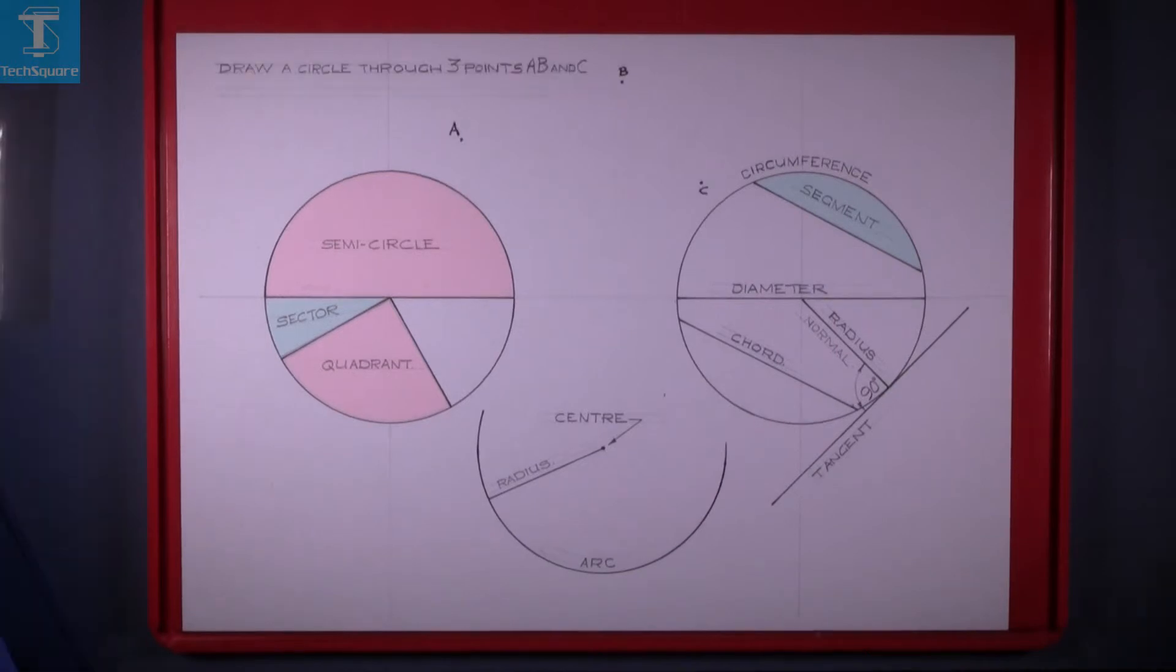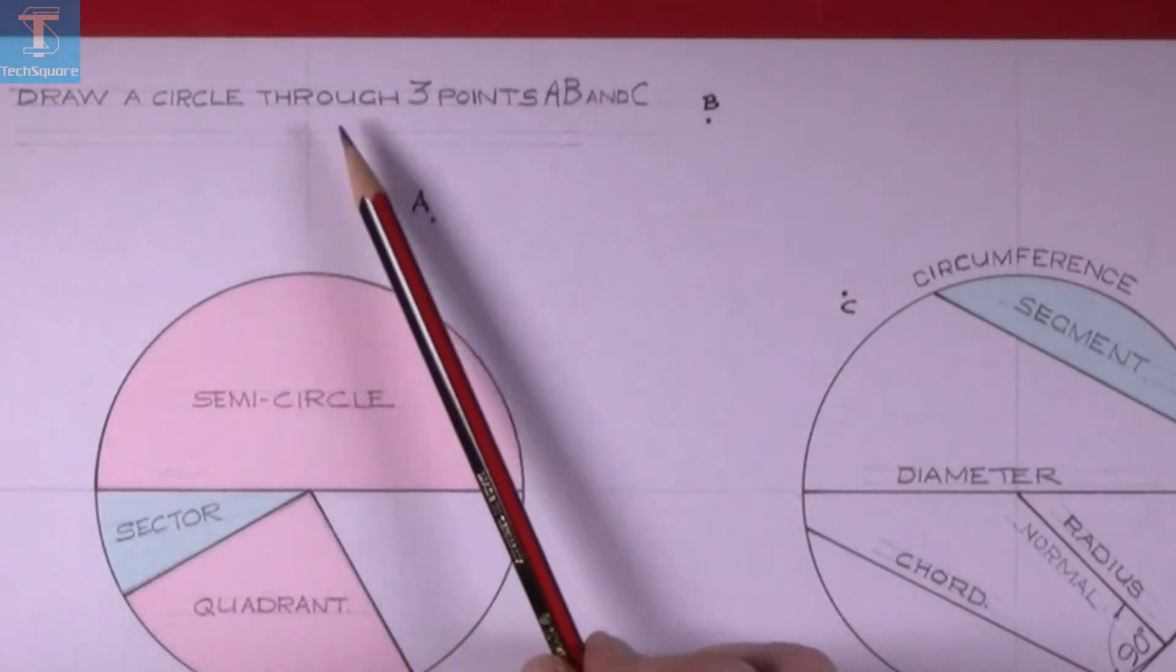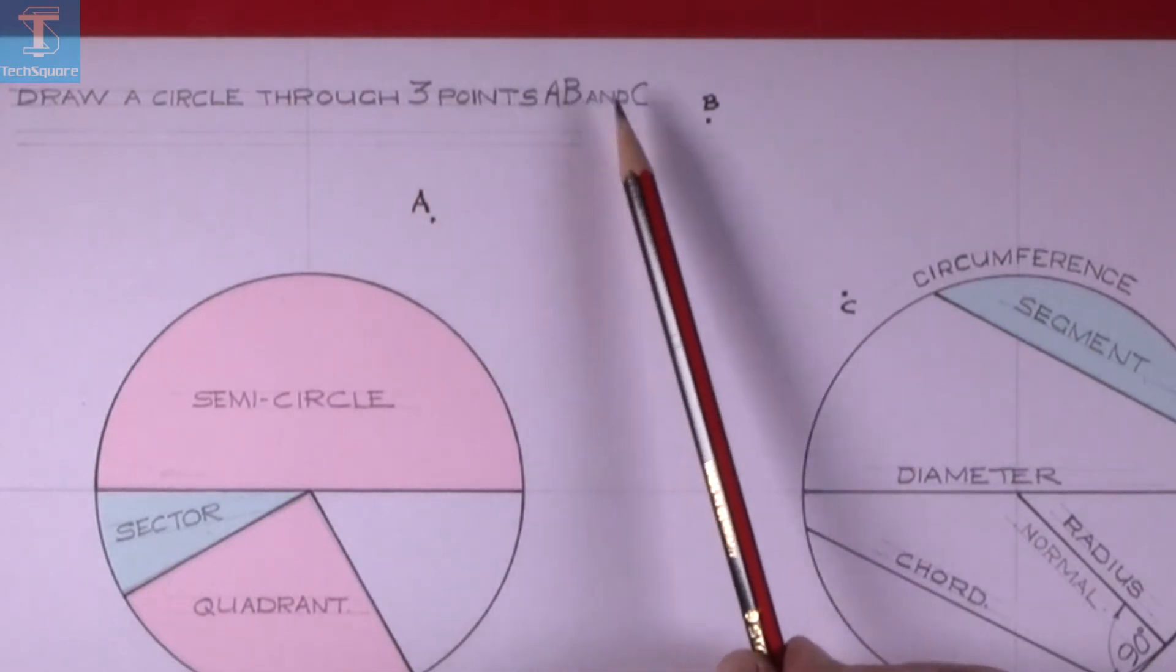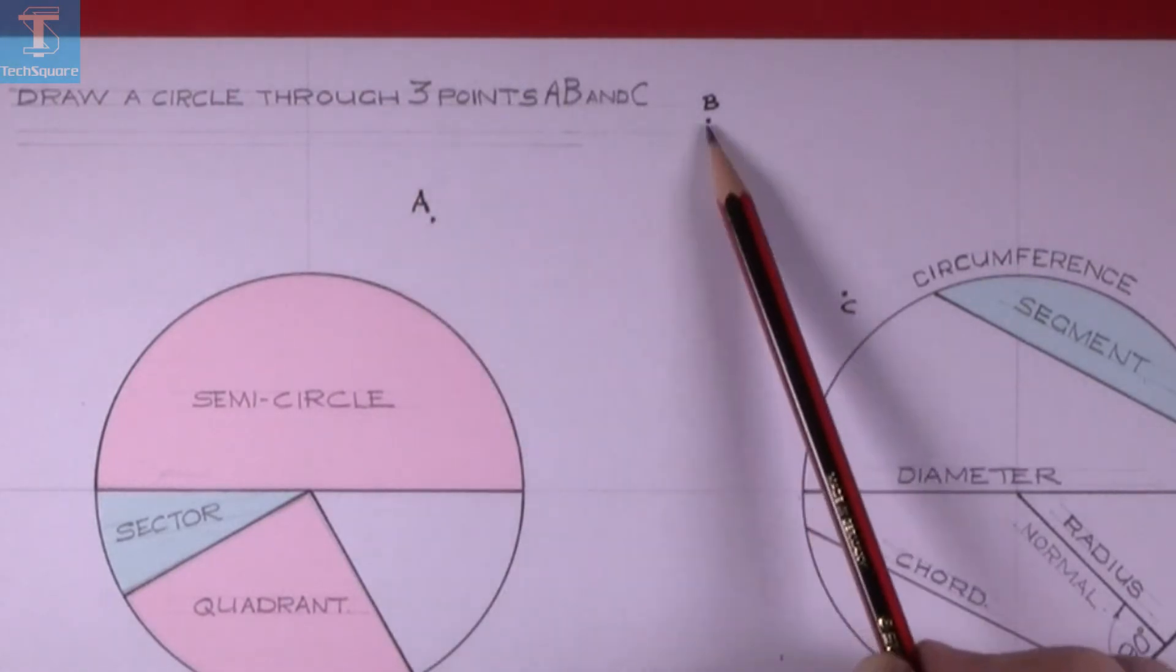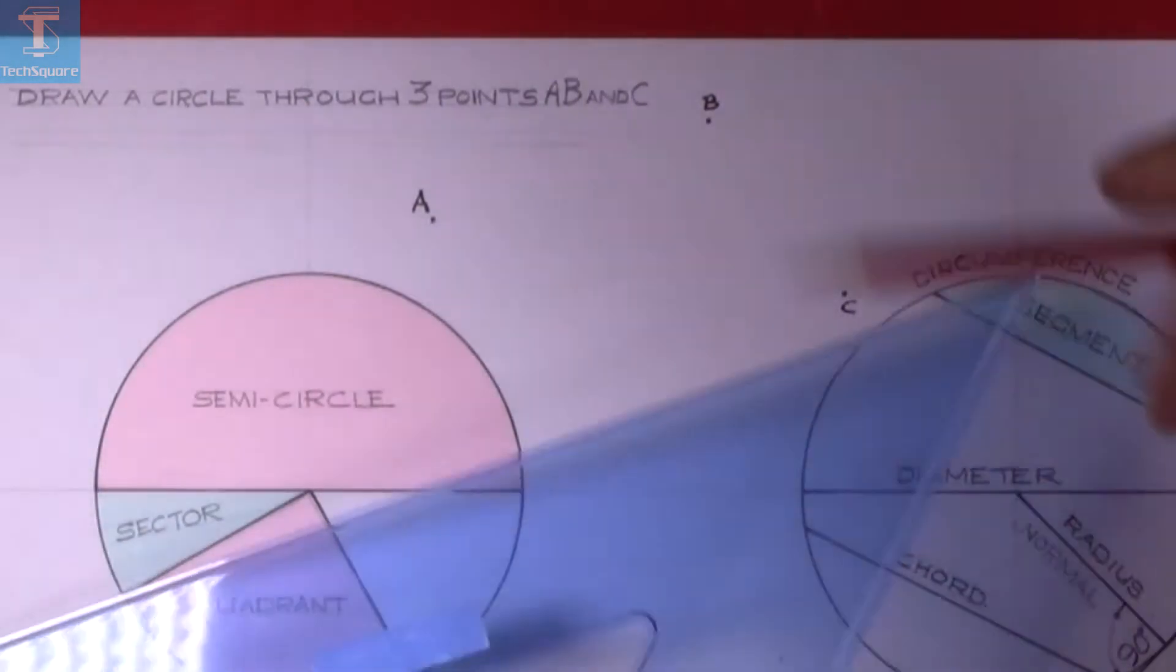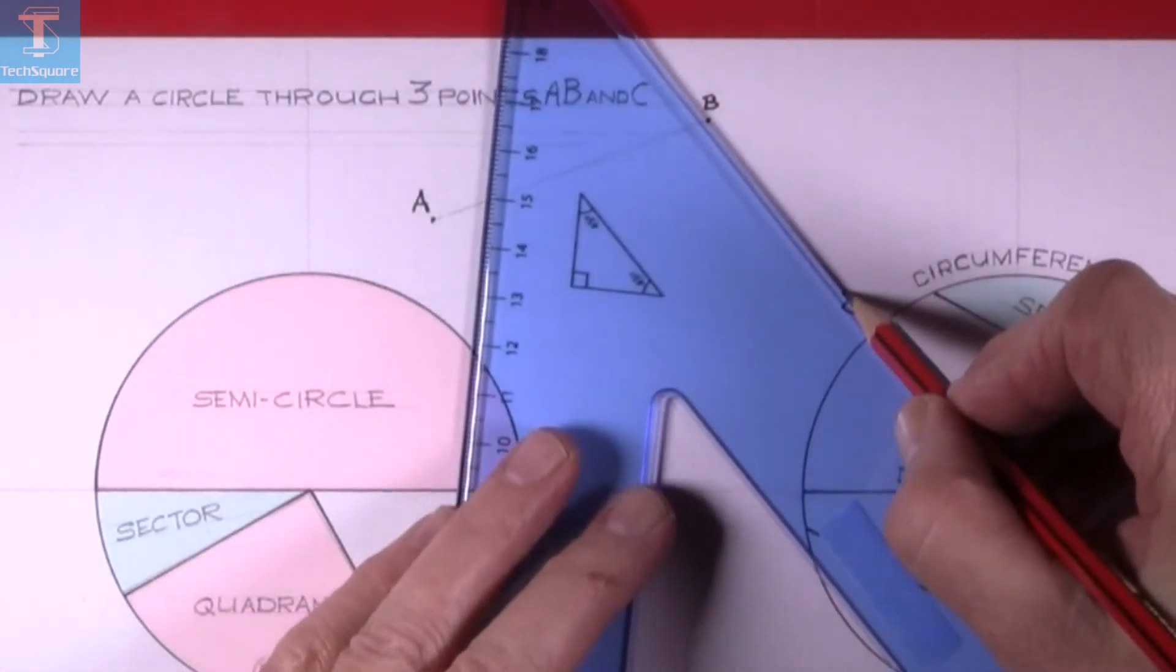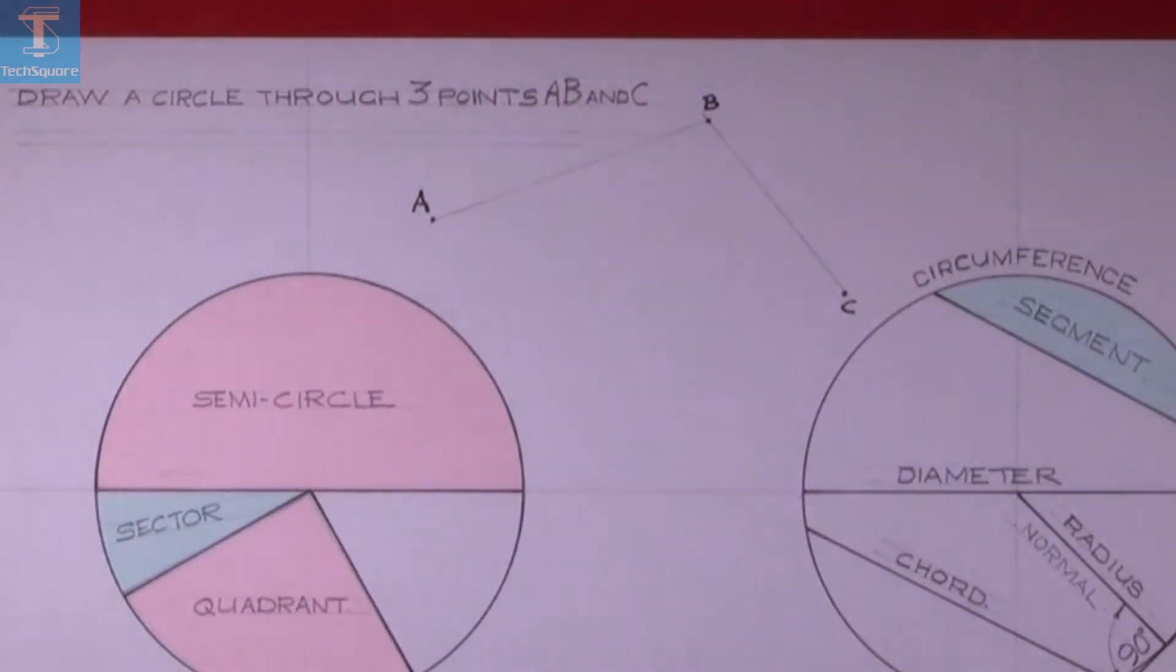The opposite is also true. If we are given three points to find a circle that will pass through points A, B, and C, you join the points, which means you're forming the cords again. I bisect these two lines, which is what we were showing you in the last exercise.